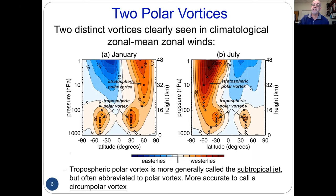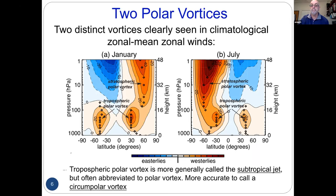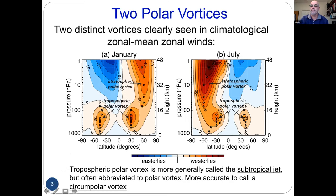The easiest way to see this is to look at the zonal mean zonal winds. The plot on the left is the January climatology and on the right is July. Red colors are westerly winds, blue are easterlies. In the stratosphere — above 100 hectopascals — there are strong winds in the winter hemisphere. In the troposphere, there are westerly winds all year round, and they're clearly separated with a break around 100 hectopascals. So we have a tropospheric polar vortex and a stratospheric polar vortex.